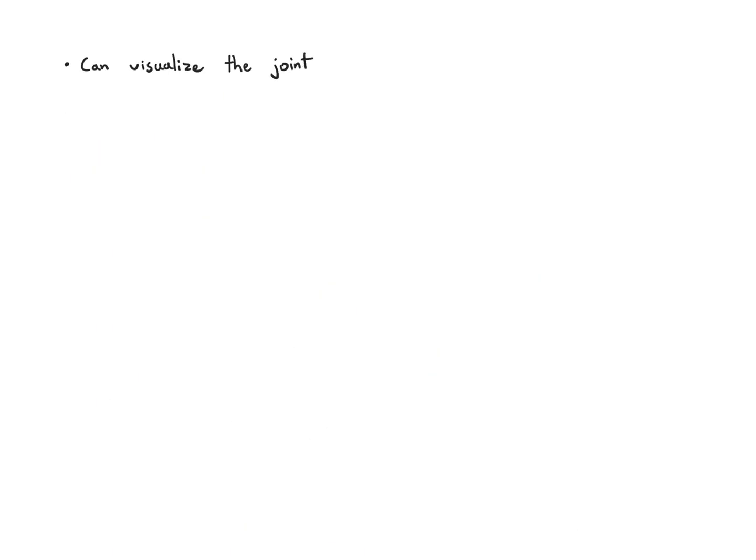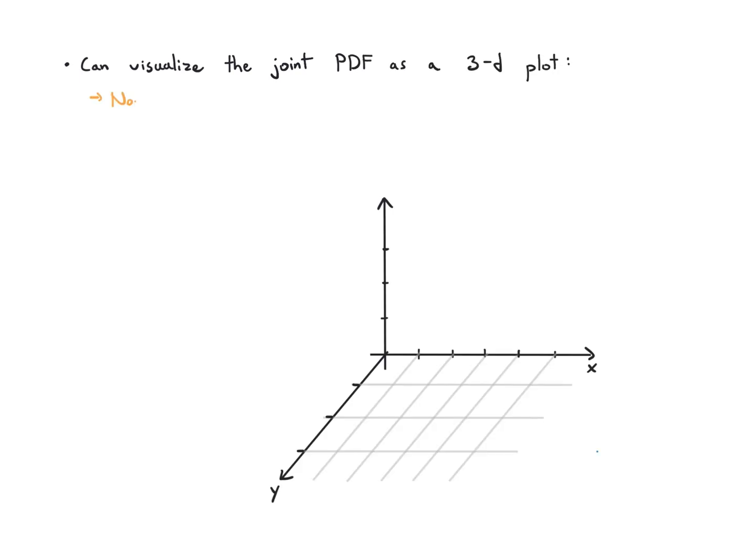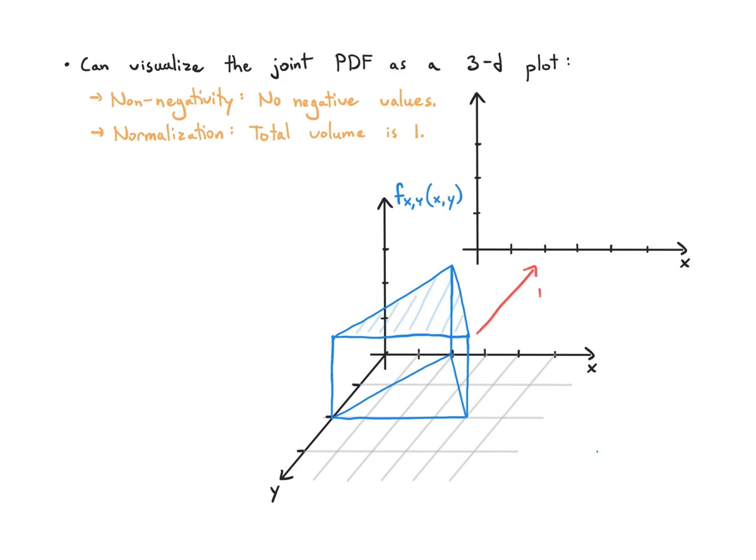We can visualize the joint PDF as a 3D plot, and this is useful to get some intuition. Non-negativity tells us it can't have negative values, and normalization tells us that this plot has to have total volume, not just area, but volume equal to one. Here's just a simple joint PDF that I can draw for you—it's kind of this elevated triangle with volume one.